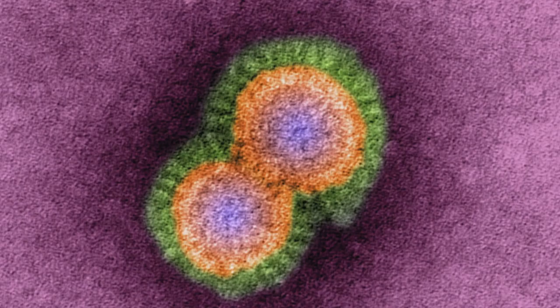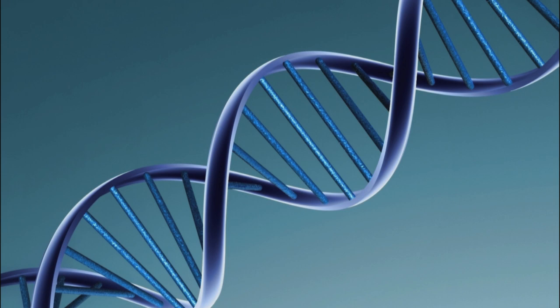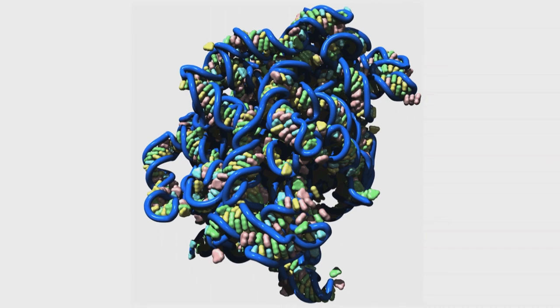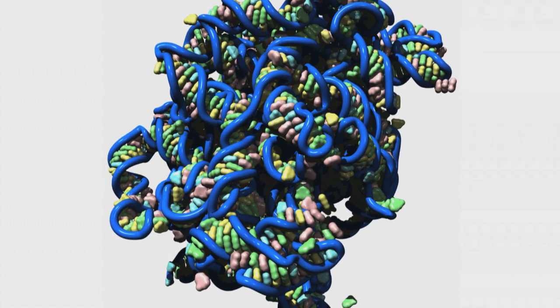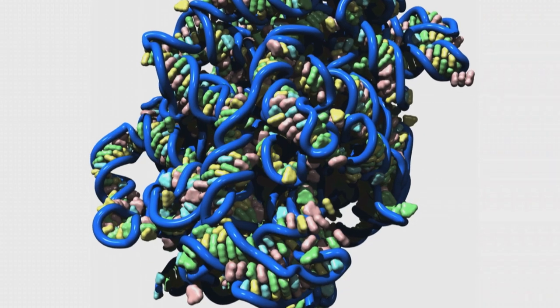The RNA has two roles in influenza. One is it carries the genetic information, so it's influenza's equivalent of DNA in humans. And also it codes for proteins, telling what sequence protein to make.